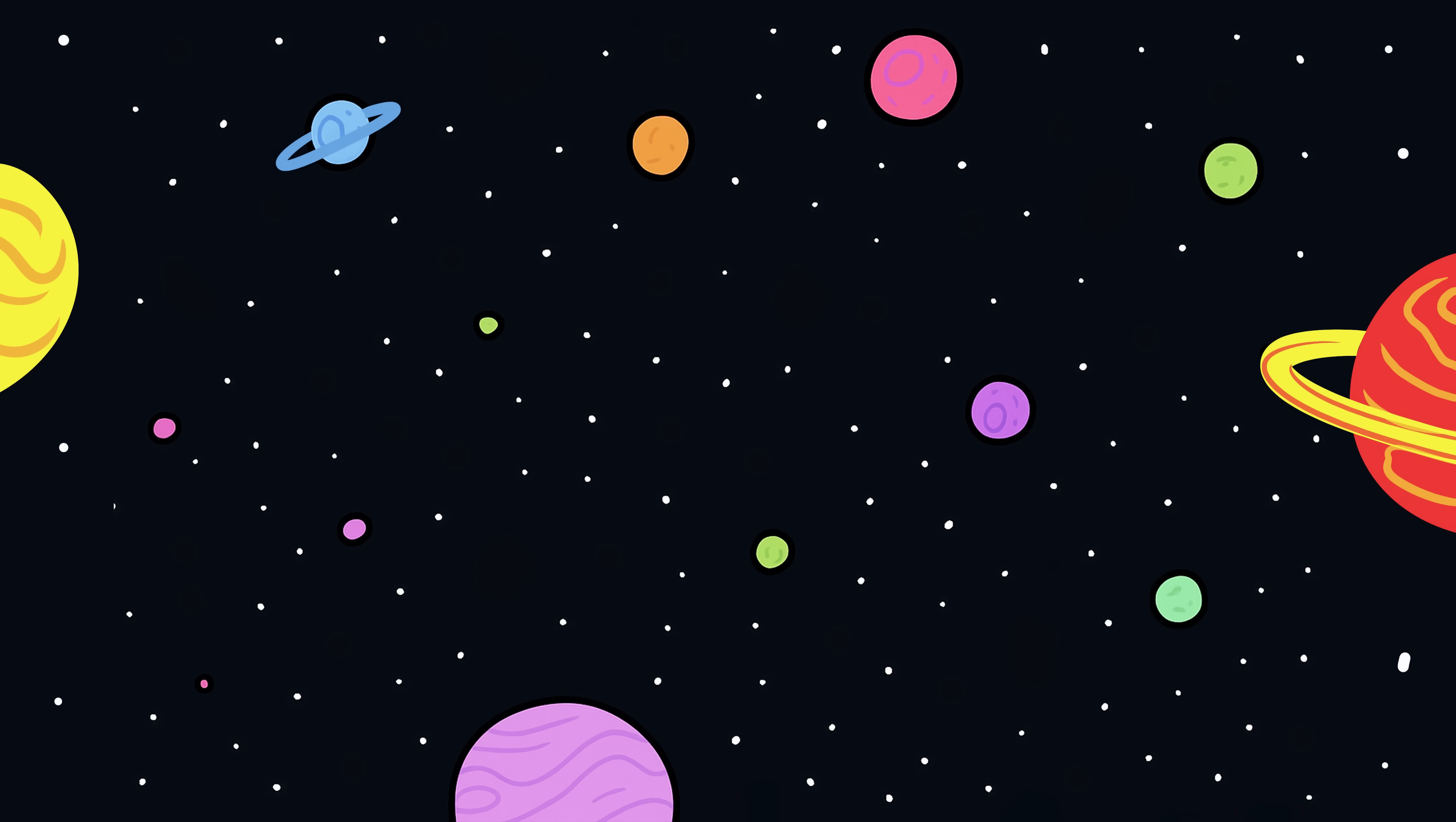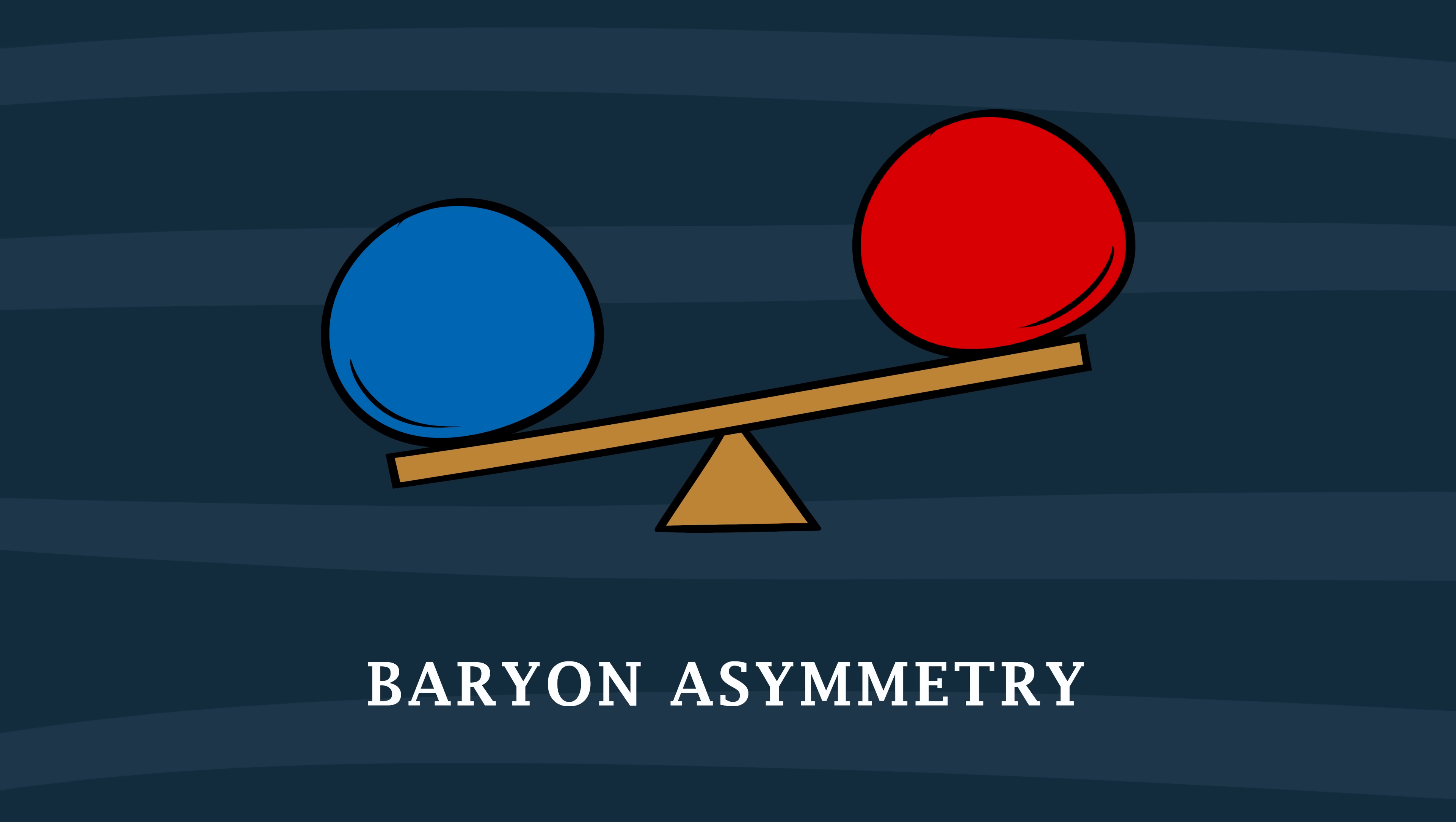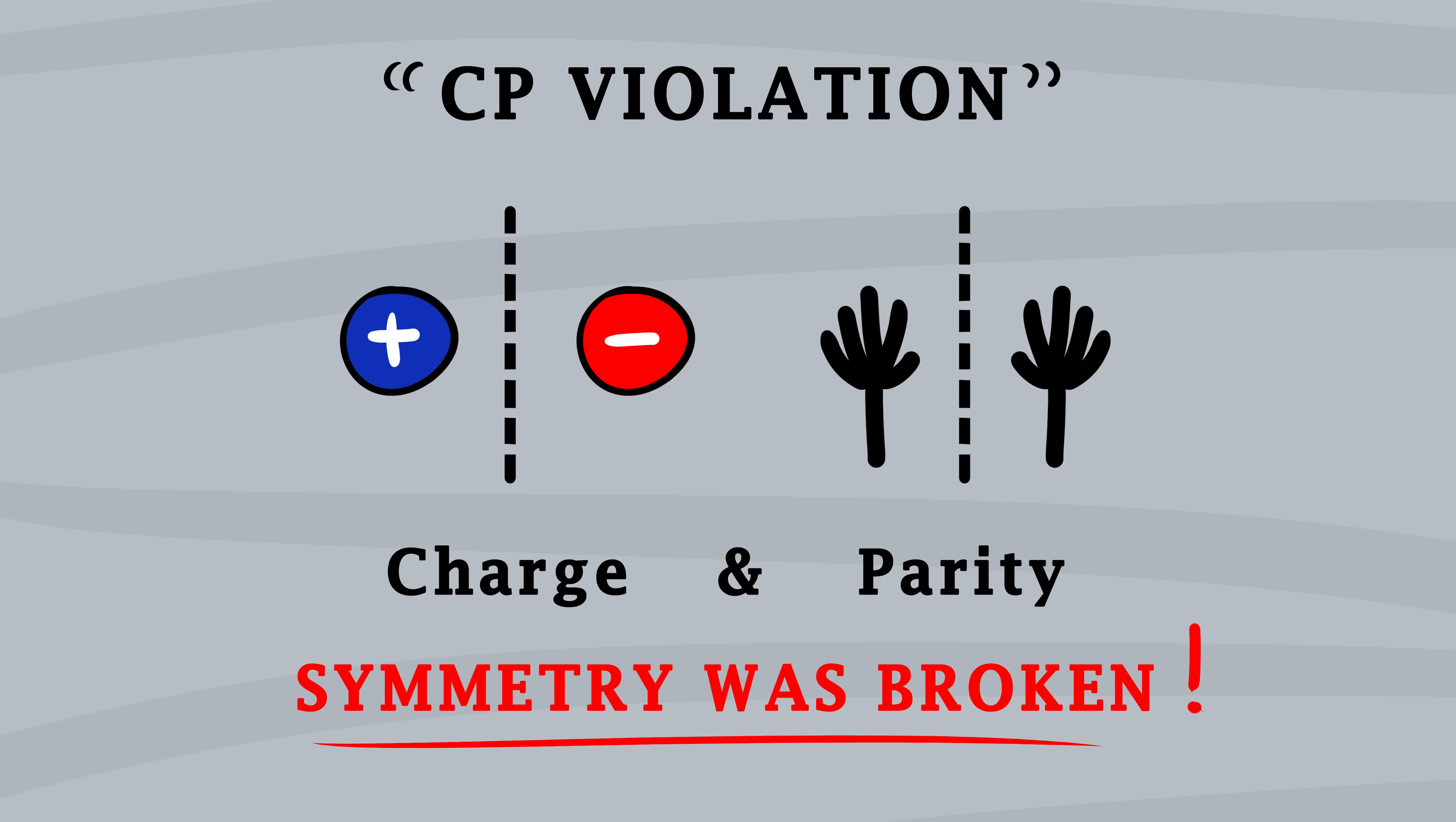So what happened? No one knows for sure. A tiny asymmetry tilted the universe toward matter, letting stars, planets, and eventually us exist. But the cause of that imbalance, called baryon asymmetry, remains one of the biggest unsolved questions in cosmology. Physicists have tried every angle. Some say neutrinos, those ghostly particles that pass through you by the trillions every second, might hold the answer. Maybe they behaved differently in the early universe, tipping the scales. Others blame a mysterious CP violation, a subtle difference in how matter and antimatter decay.